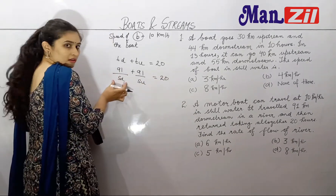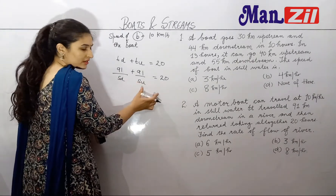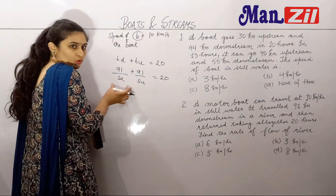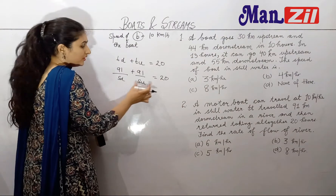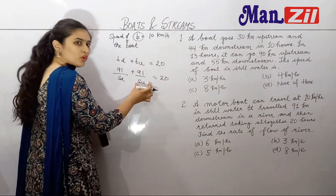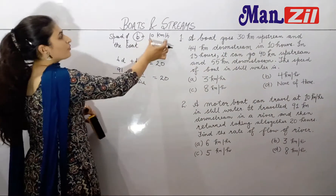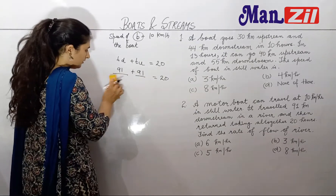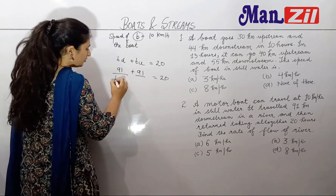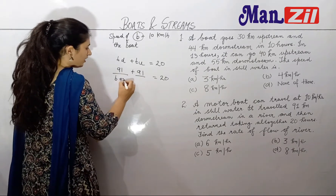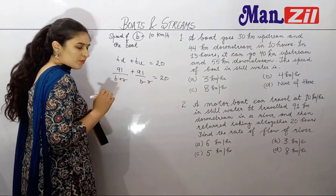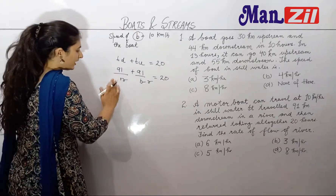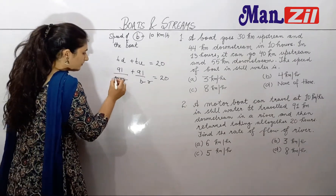We can write the speeds as B plus R and B minus R — speed of the boat plus speed of the river, and speed of the boat minus speed of the river. The B value is already given as 10. So we will put 10 in place of B in both expressions.